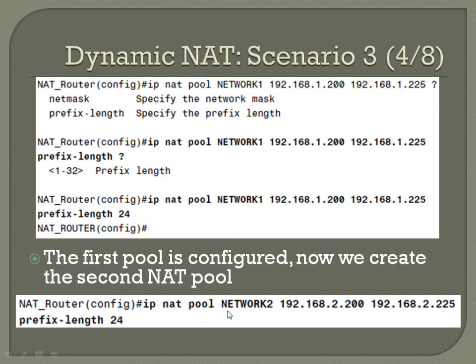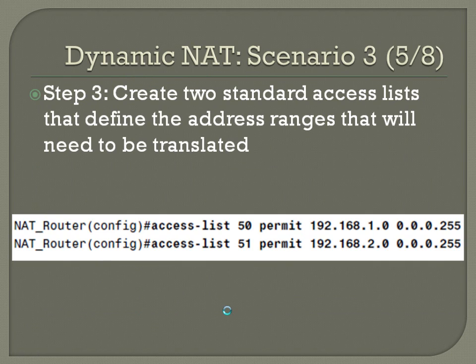Step three: create two standard access lists that define the address ranges to be translated. We're using numbered access lists. Access-list 50 permit 192.168.1.0 0.0.0.255. And for the other block: access-list 51 permit 192.168.2.0 0.0.0.255. Remember, these use inverted subnet masks.